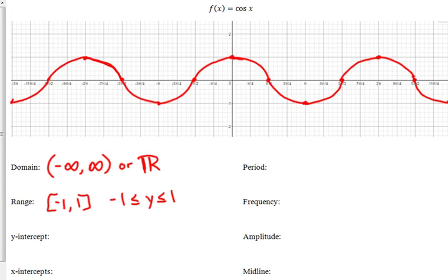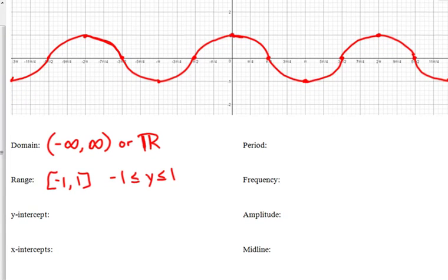Now, our y-intercept is different. Where do we cross the y-axis on this one? At one. We don't start at the origin. We start at one. So, we don't start on the midline. We start off of the midline. Sine started on the midline, in the middle of its function. Cosine starts at its maximum value.